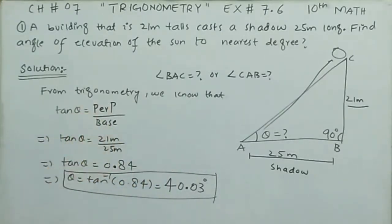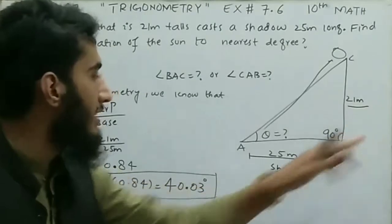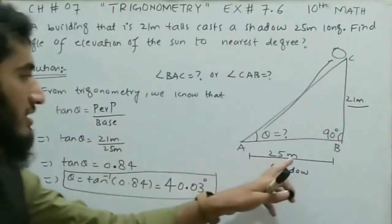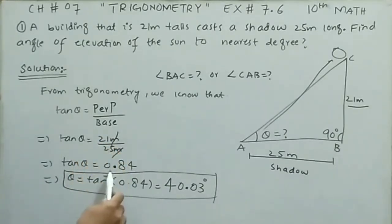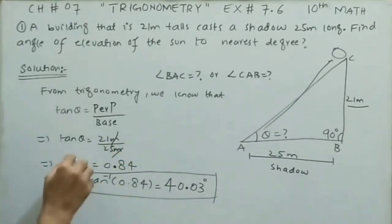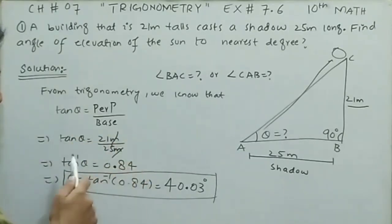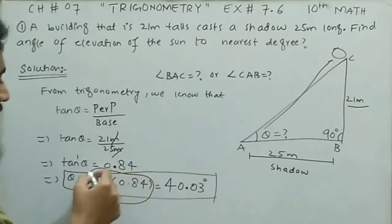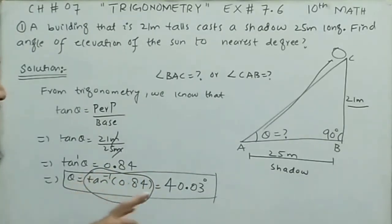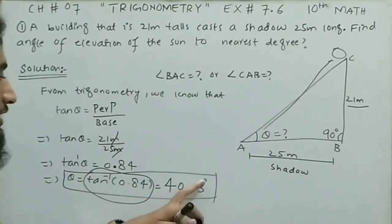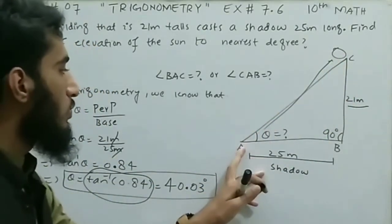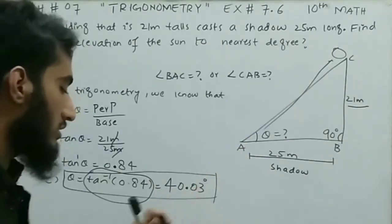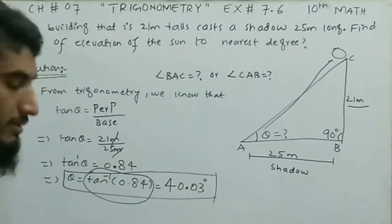Tangent theta equals perpendicular divided by base, so tangent theta equals 21 meters divided by 25 meters. The meters cancel, giving 21/25 = 0.84. Shifting tangent to the right-hand side, it becomes theta equals tangent inverse of 0.84. Putting this in the calculator gives 40.03 degrees. So the angle of elevation from the sun to this point is 40.03 degrees — this is the required answer.